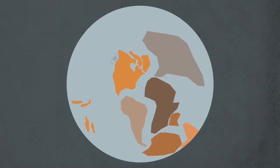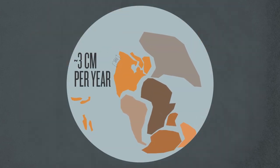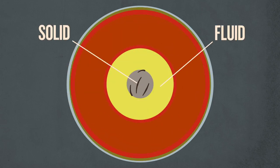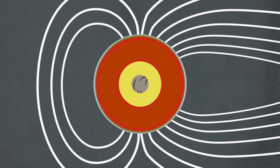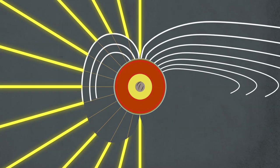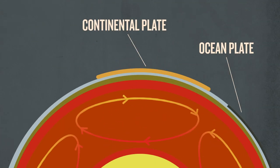Continents move at the speed of fingernail growth. Molten liquid surrounds a solid spinning metal core, creating a magnetic field protecting life from the sun. This heat propels the continent and ocean plates across the earth.